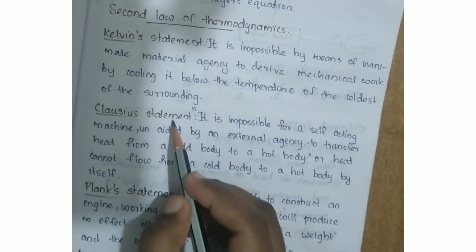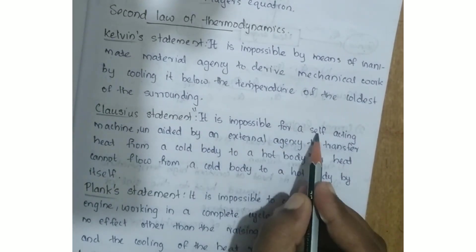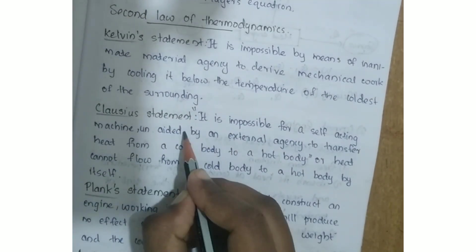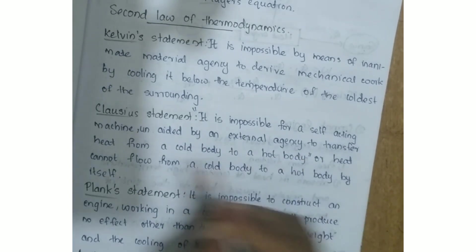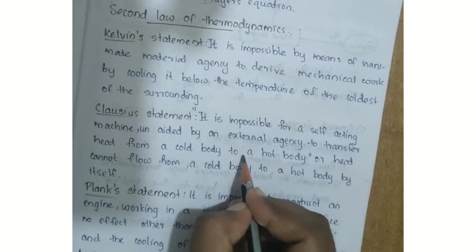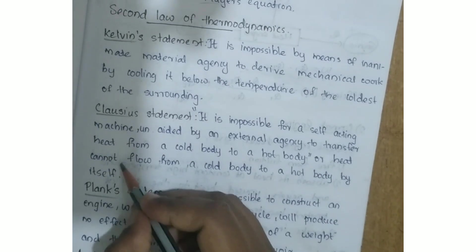The Clausius statement: it is impossible for a self-acting machine, unaided by an external agency, to transfer heat from a cold body to a hot body. Heat cannot flow from a cold body to a hot body by itself.